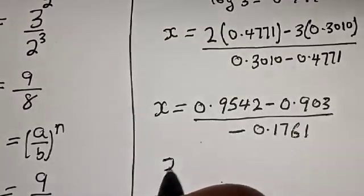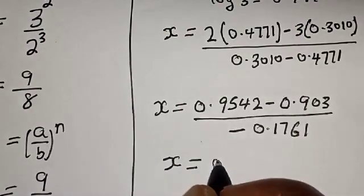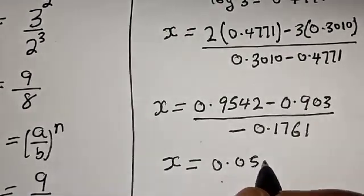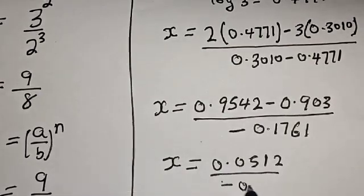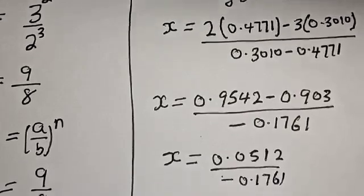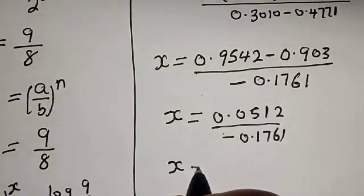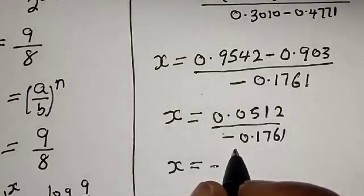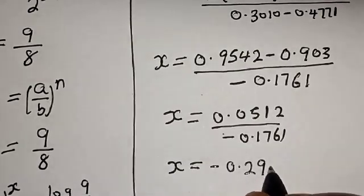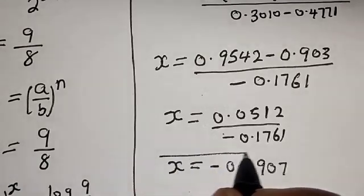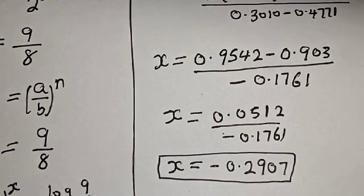x is equal to 0.0512 divided by negative 0.1761, which gives x is equal to approximately negative 0.2907. That is our final answer.